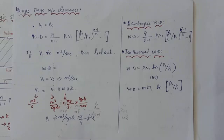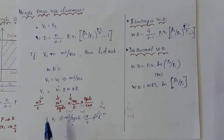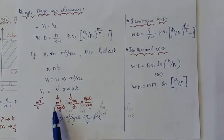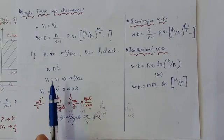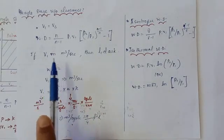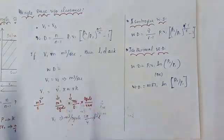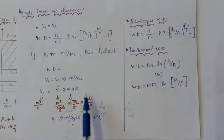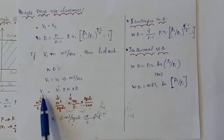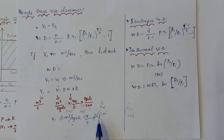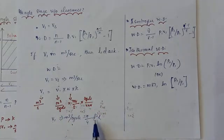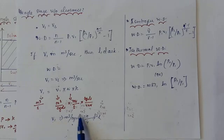Volumetric efficiency is available; clearance volume is available. So in this case, if the volume is available in meter cube per second or meter cube per minute, directly substitute into the power formula. But for cylinder dimensions, the volume is in meter cube per cycle. So if the volume is available in terms of diameter, convert accordingly before substituting into the formula.